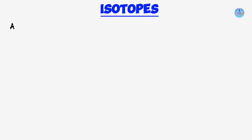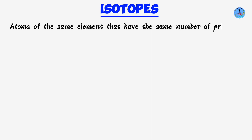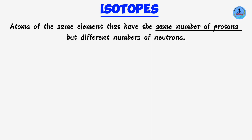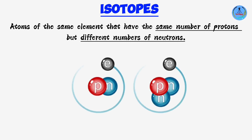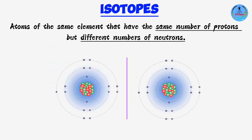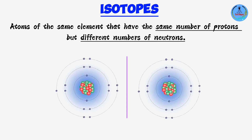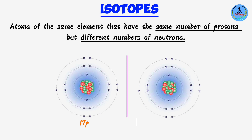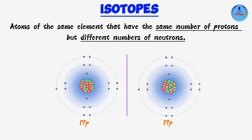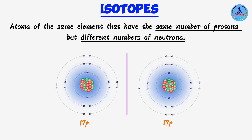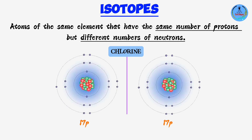Isotopes are atoms of the same element that have the same number of protons but different numbers of neutrons. It's the protons that determine the identity of an atom. For example, if two atoms both have the atomic number of 17, they both have 17 protons and belong to the same element — chlorine — because chlorine has the atomic number of 17.